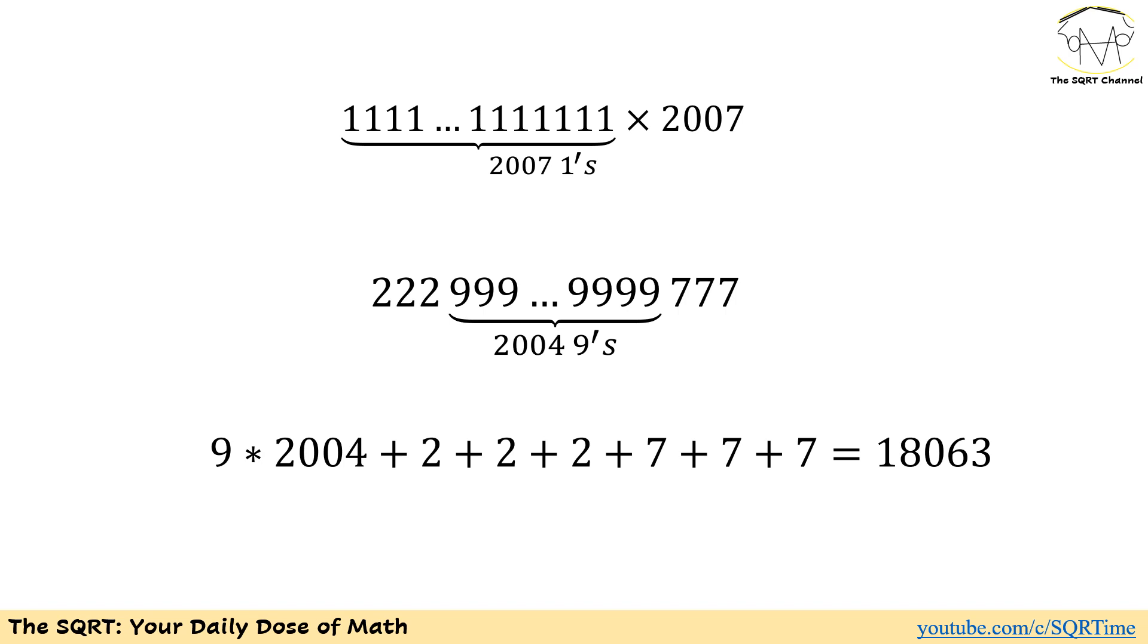Now the only thing that we need to do is to add them together. We have 2004 nines, 3 twos, and 3 sevens. If you add them together, we get 9 times 2004 plus 2 plus 2 plus 2 plus 7 plus 7 plus 7, which equals 18063. That concludes our answer.